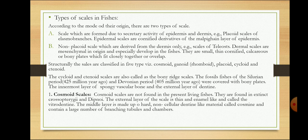The scales found in fishes are of many types. According to their origin, they are of two types: those formed by the secretory activity of the epidermis and dermis — for example, placoid scales of elasmobranchs, which are derivatives of the Malpighian layer of epidermis — and non-placoid scales derived from the dermis. Cycloid and ctenoid scales are also called bony ridge scales and were first found in fossil fishes.